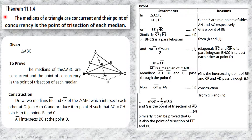Assalamualaikum students. Today we will learn chapter 11.1.4: The medians of a triangle are concurrent and their point of concurrency is the point of trisection of each median. The median divides the triangle into half and the midpoint is divided into half. Now we learn what a median is and that concurrent means existing at one point.